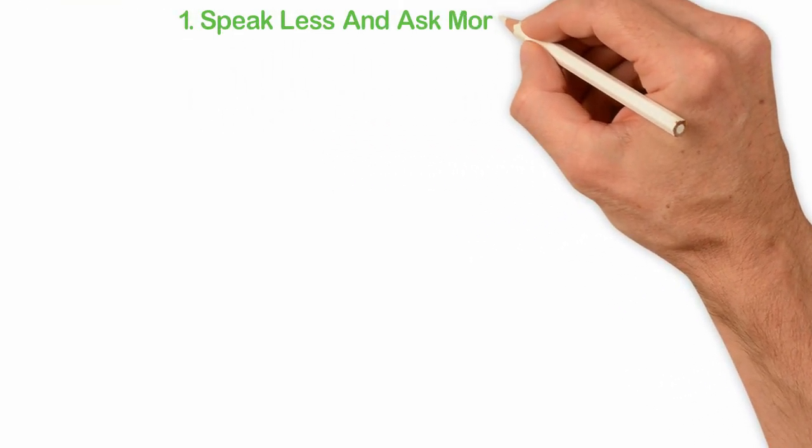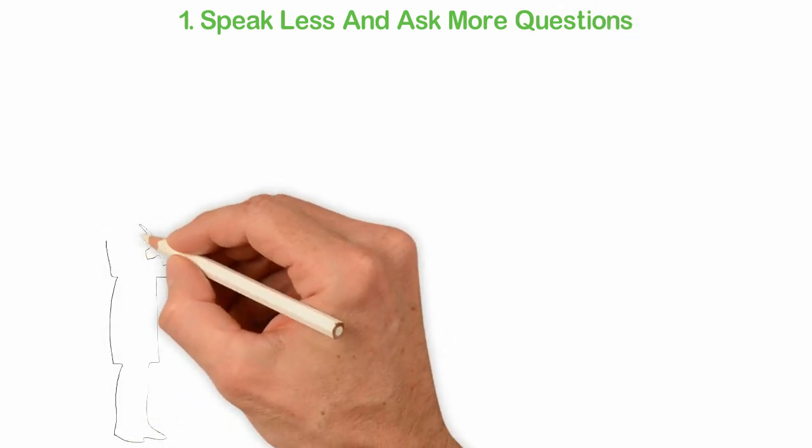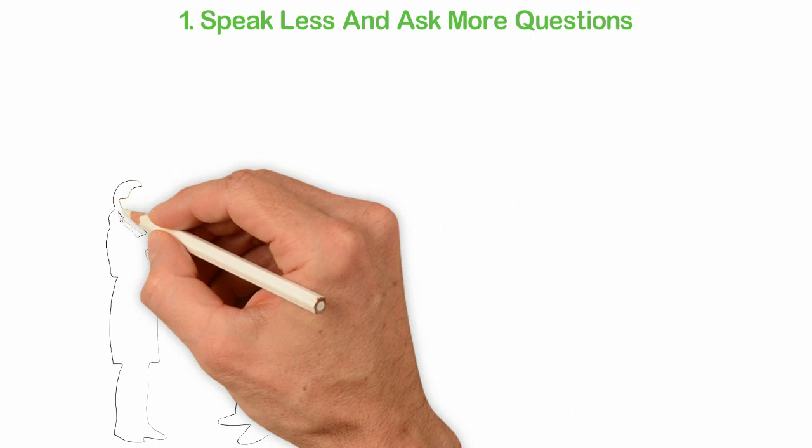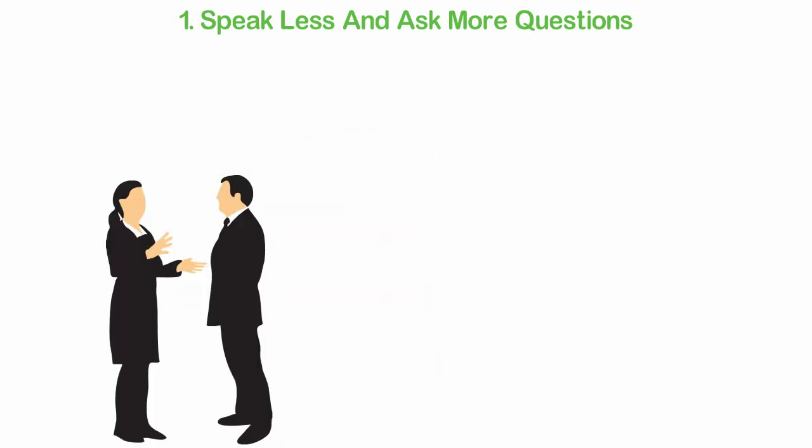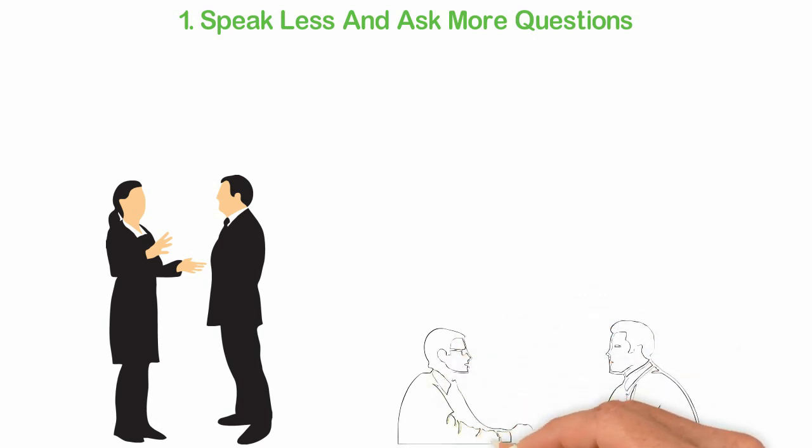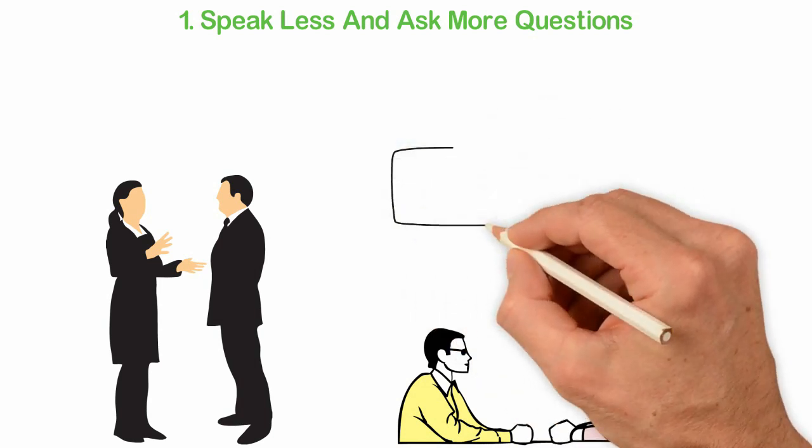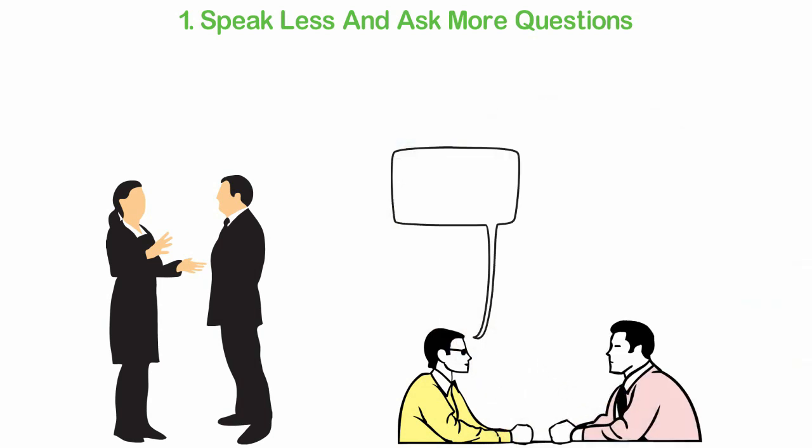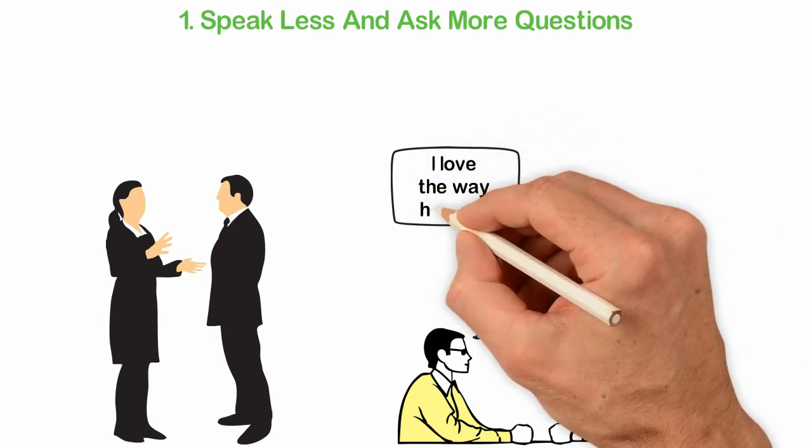One: Speak less and ask more questions. One of the most important social skills you can build is learning to speak less and ask questions more. Not in a way that makes you seem interrogative, but because you want to understand people better and strengthen your relationships with them. People like to talk about themselves, and asking questions that take them down memory lane or cause them to air their opinion about a subject will help foster the relationship that exists between you two.